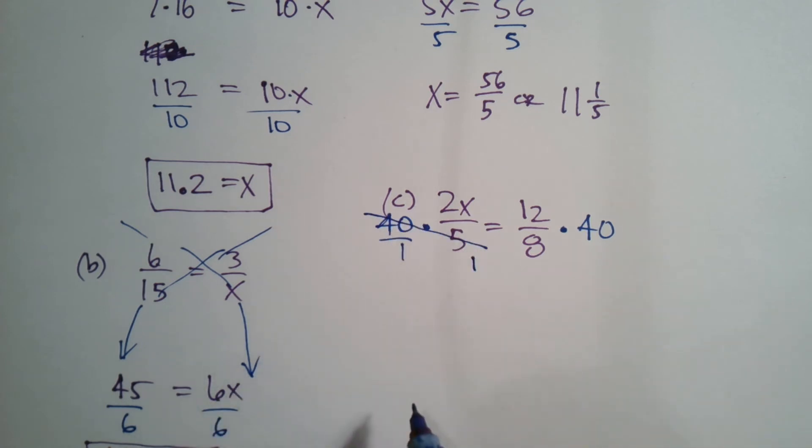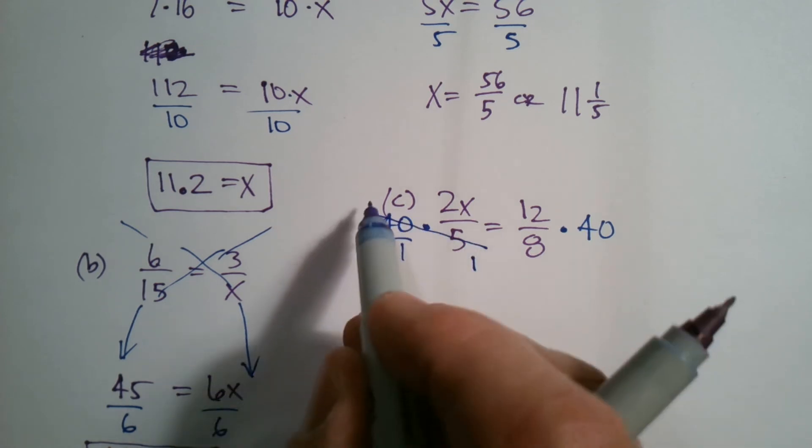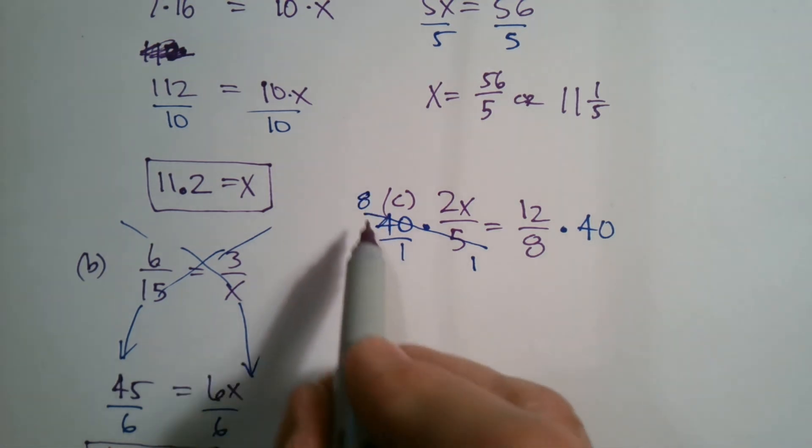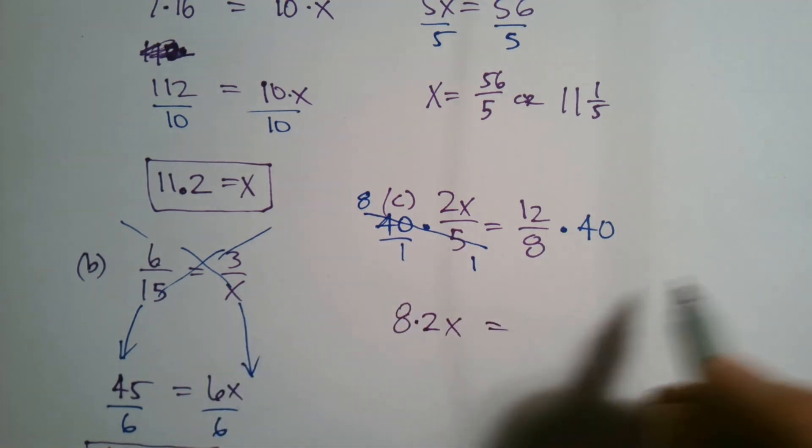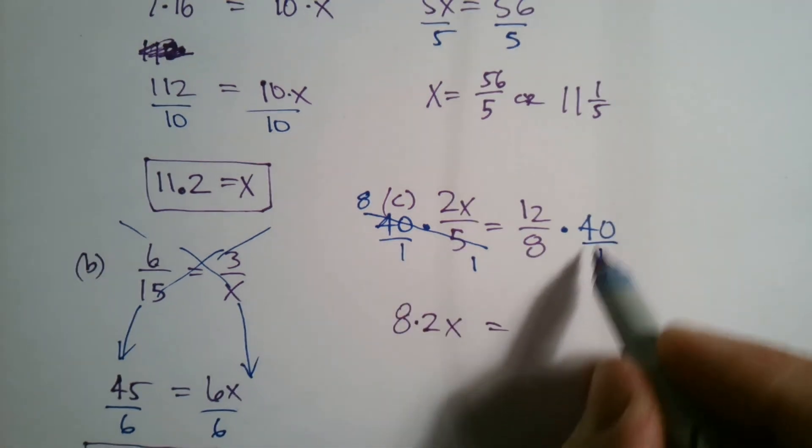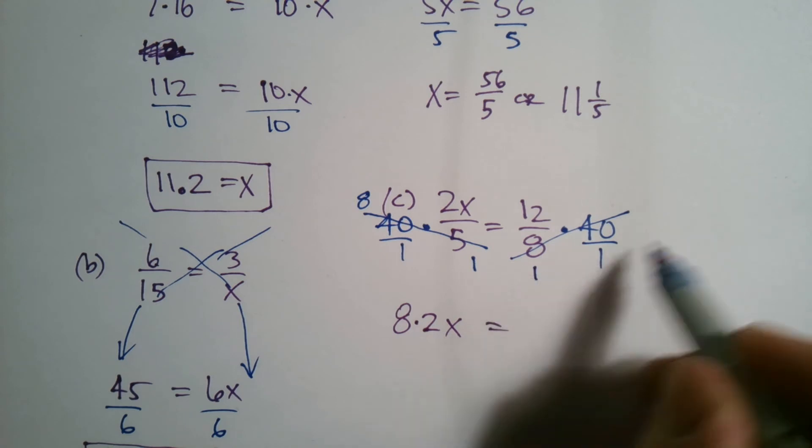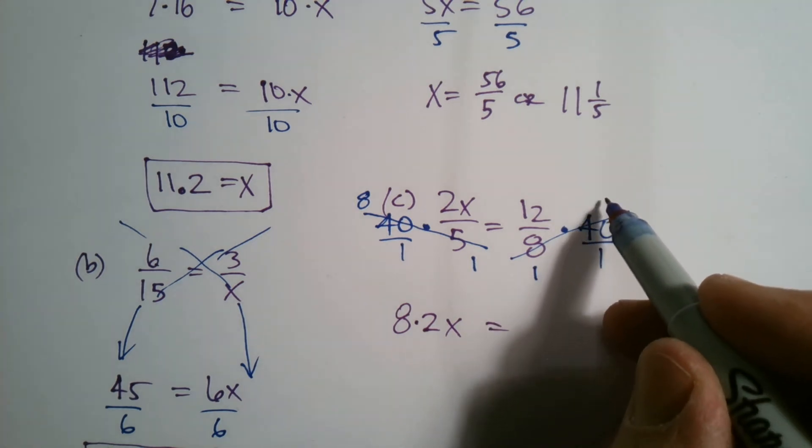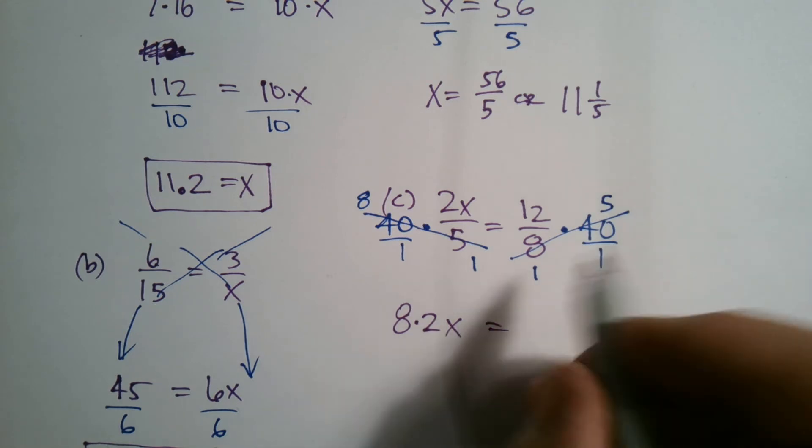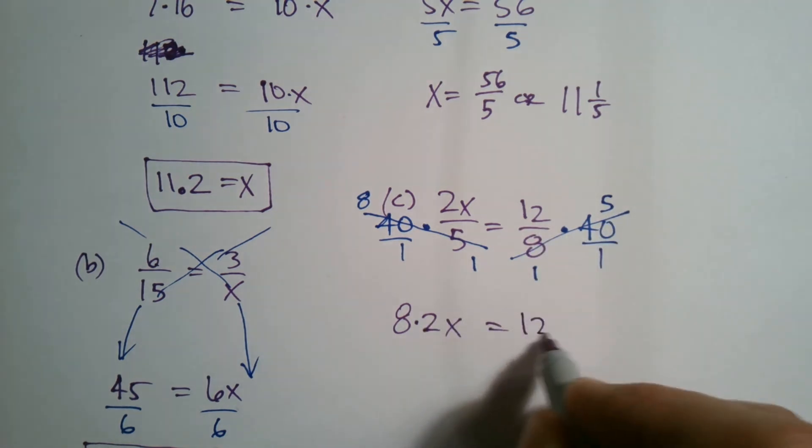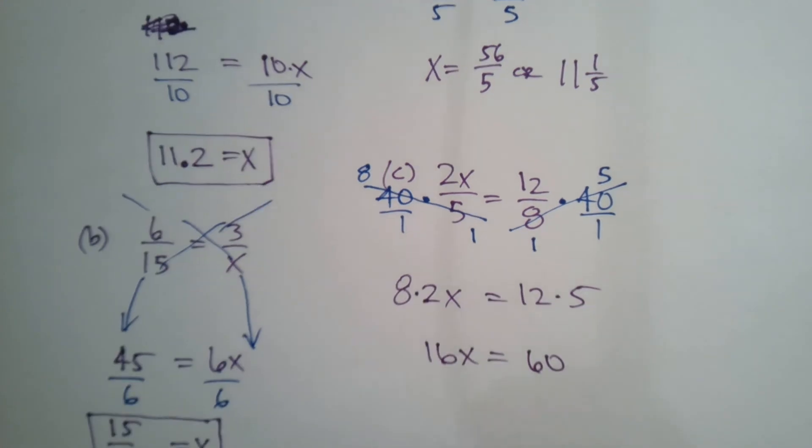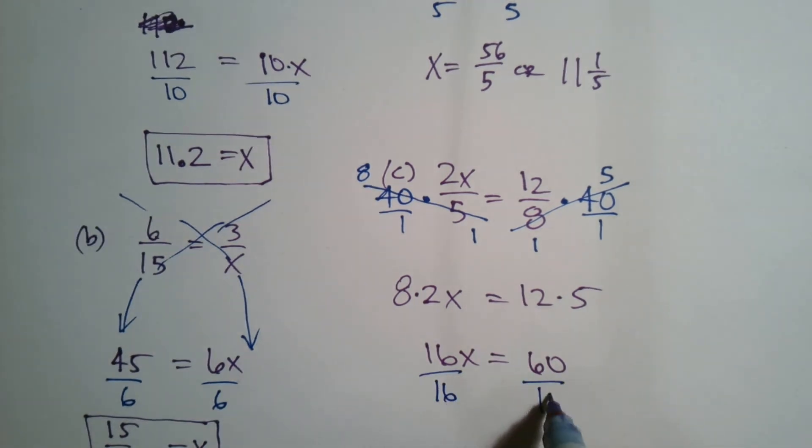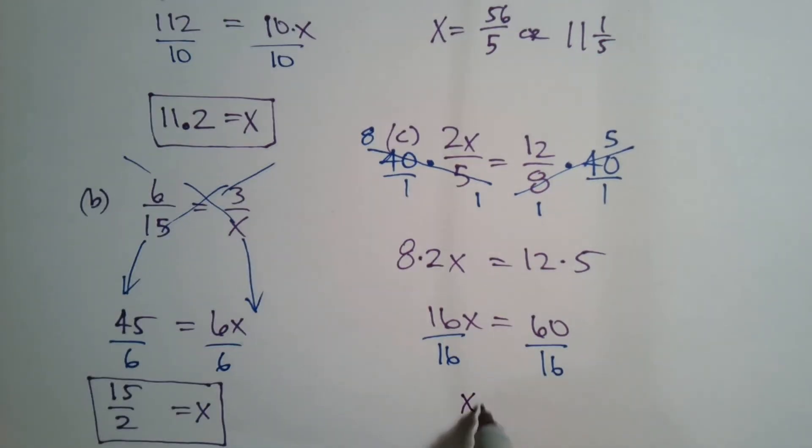So I chose 40 because when I multiply that 40 over one times two X over five, those two cancel—that five divides out to be a one and the 40 becomes an eight. So now I have this eight. I'll rewrite so we can see it. Eight times two X is what I've got on this side. And over here, the same thing. I could take that 40 over one. The eight divides out to be one and it divides into 40 to be five. So then I have 12 times five on this side, right? I'm just writing that out. I know you can then simplify that to be 16X is equal to 60.